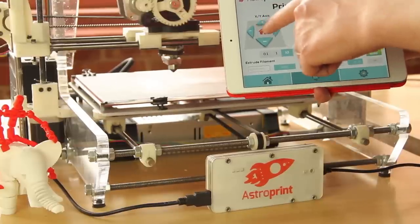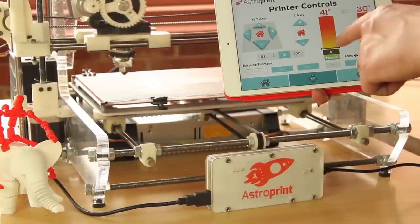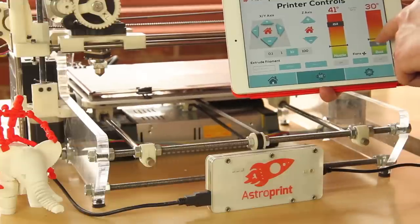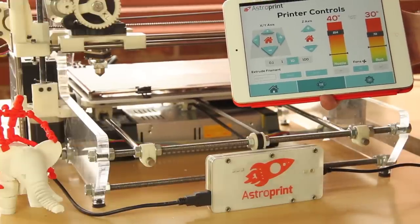Currently, the AstroBox and AstroPrint.com are ready to move into private beta. However, before we release AstroPrint to the public, we want to add in some important features, such as camera support, remote access, and a robust printer and filament database.